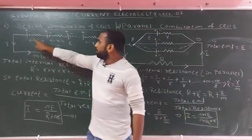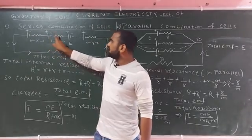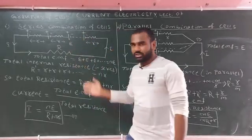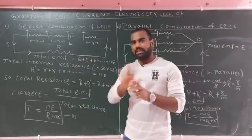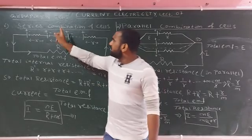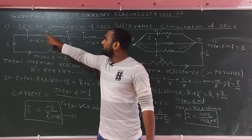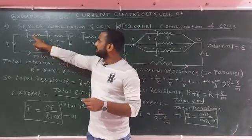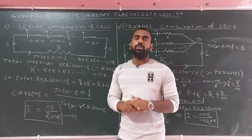In series combination, the negative terminal of the first cell is connected to the positive terminal of the second cell. The negative terminal of the second cell is connected to the positive terminal of the third cell, and so on. So the connections go: negative, positive, negative, positive — each cell connected to the next.